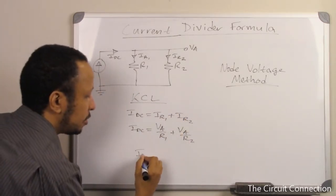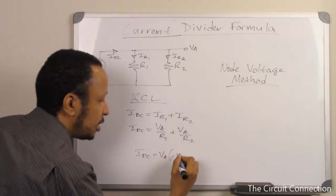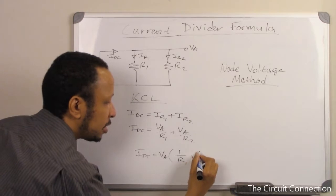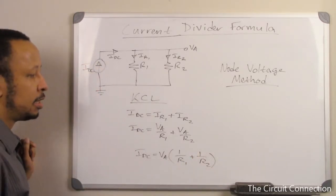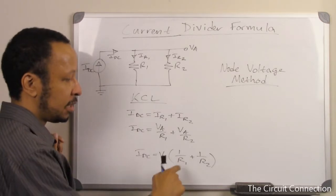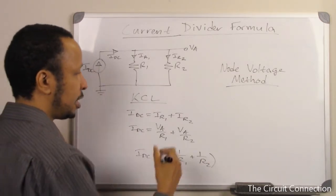Next what we'll do is we'll proceed and bring out VA. And so, we have VA times 1 over R1 plus 1 over R2. Next thing we'll do is get a common denominator for R1 and R2, and add both of them up.